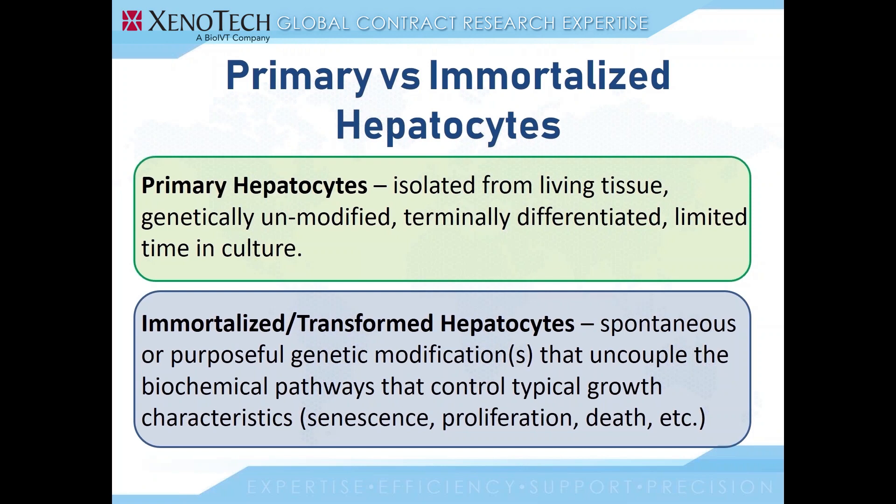Immortalized hepatocytes have undergone purposeful or spontaneous genetic modifications that lead to uncoupled growth characteristics. They resist senescence and cellular death, and they proliferate in culture. However, immortalized hepatocytes, much like stem cells, can't fully replicate the phenotypes found in primary hepatocytes, but they can still be very useful for certain assays.